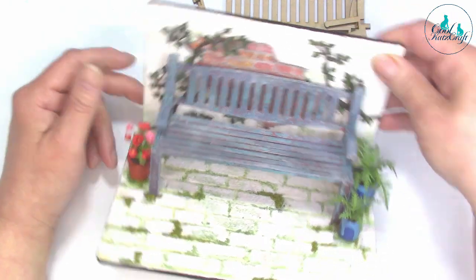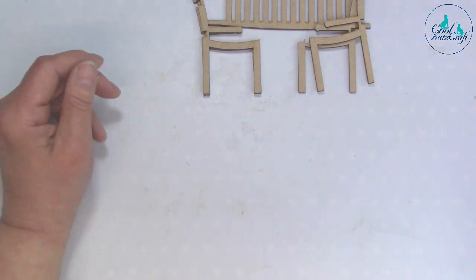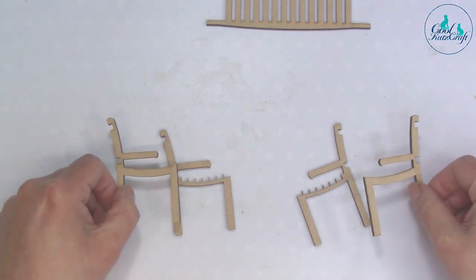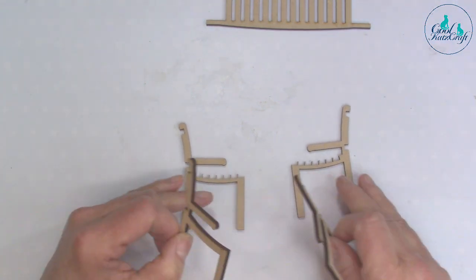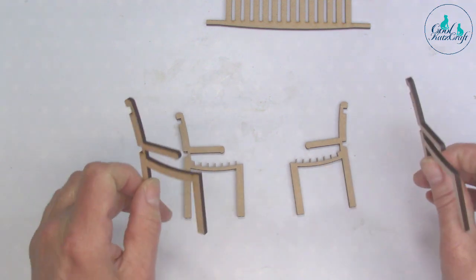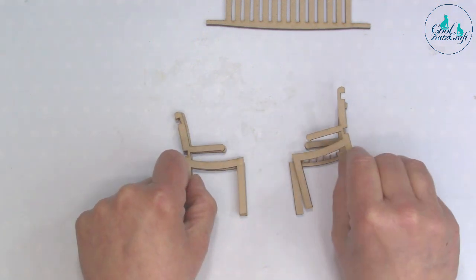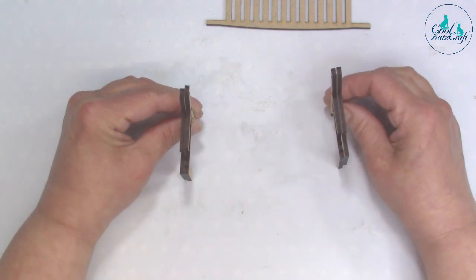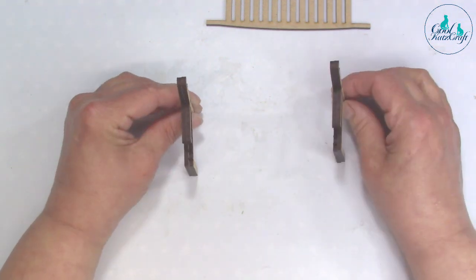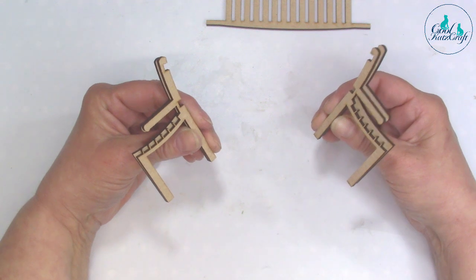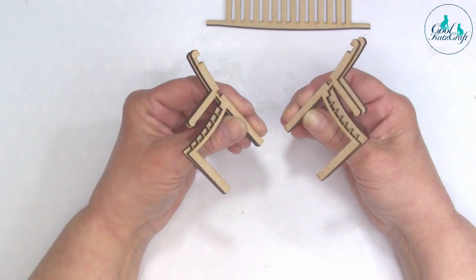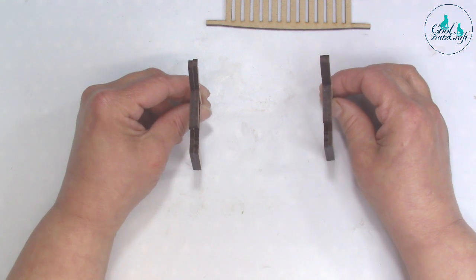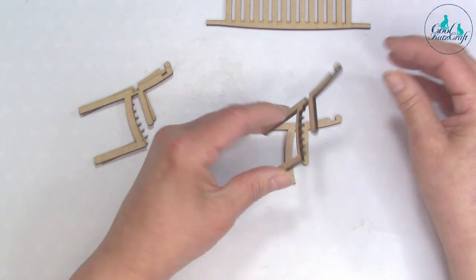Now I'm going to show you how to put together our garden bench. You get four sides and as you can see, you've got sides with little teethy bits. These ones go on top and you glue them together. Make sure the little bits with the teethy bits are on the inside and they're opposite each other.